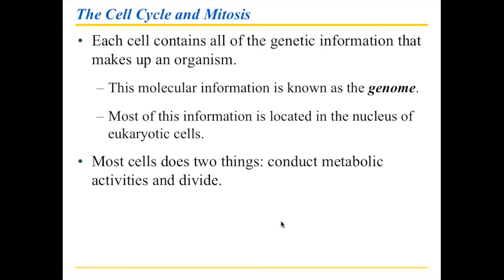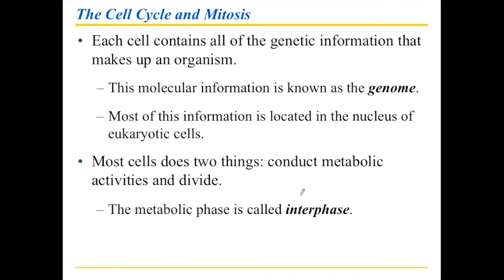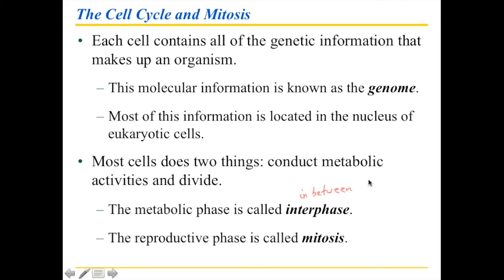What do cells do in general? They do two things: they conduct their metabolic activities — the business of the cell — and then they divide. The metabolic phase is called interphase, where 'inter' refers to an in-between stage. It is in-between two reproductive phases: one reproductive phase that produces the cell is followed by another reproductive phase that produces more cells, and the period between those is called interphase. The reproductive phase itself is what we call mitosis.